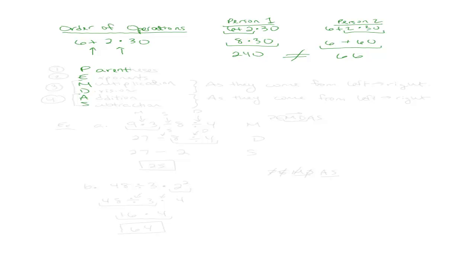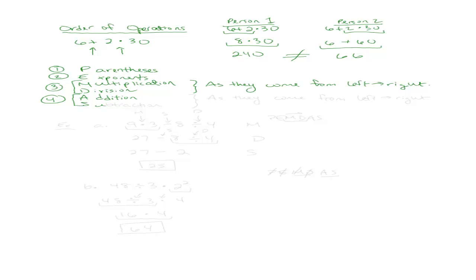The order of operations is PEMDAS. The first thing we do is group any parentheses and do those first. The next thing is any exponents. Then — and this is key — any multiplication and division. Multiplication and division are grouped together at step 3, and we do them as they come from left to right. And then addition and subtraction will be the fourth step, again done from left to right.